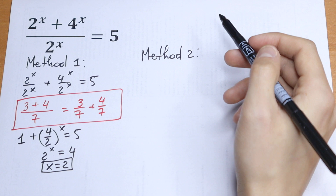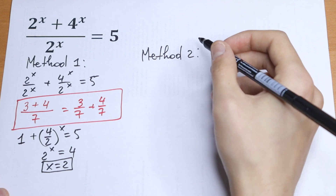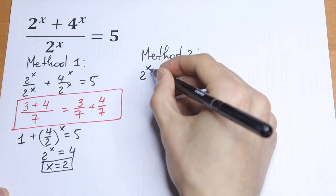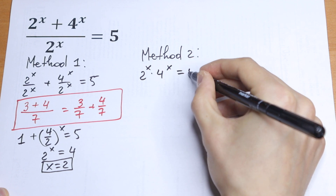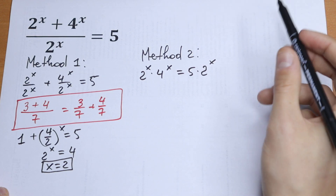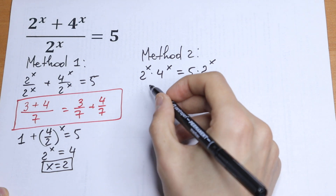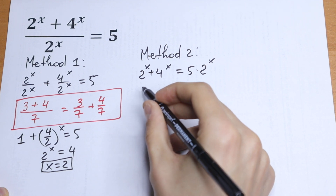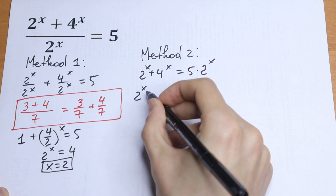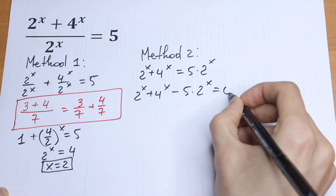We have the situation from before. We don't need 2 to the power x in our denominator, so we multiply both sides by 2 to the power x. As a result, we have only the numerator terms on the left equal to 5 times 2 to the power x. Then we bring 5 times 2 to the power x to the left, giving us 2 to the power x plus 4 to the power x minus 5 times 2 to the power x equal to 0.